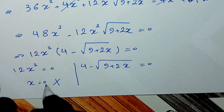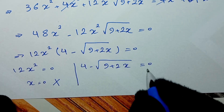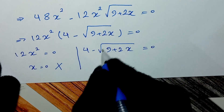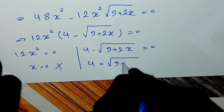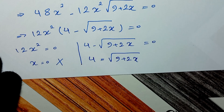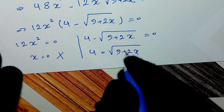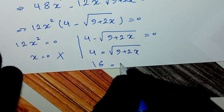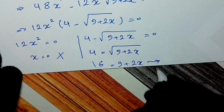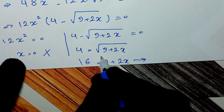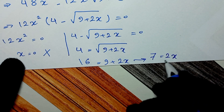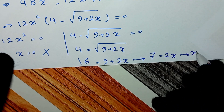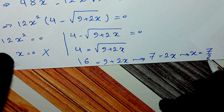For the second factor: 4 minus square root of (9 plus 2x) equals 0, so 4 equals square root of (9 plus 2x). Squaring both sides: 16 equals 9 plus 2x. Taking 9 to the other side gives 7 equals 2x, so x equals 7 over 2.